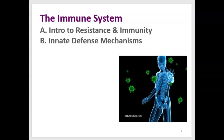In the second part, we'll look at specific resistance or innate defense mechanisms. Now, recall that the immune system isn't an organ system — it's a set of cells and chemicals that help us defend ourselves against infectious agents.